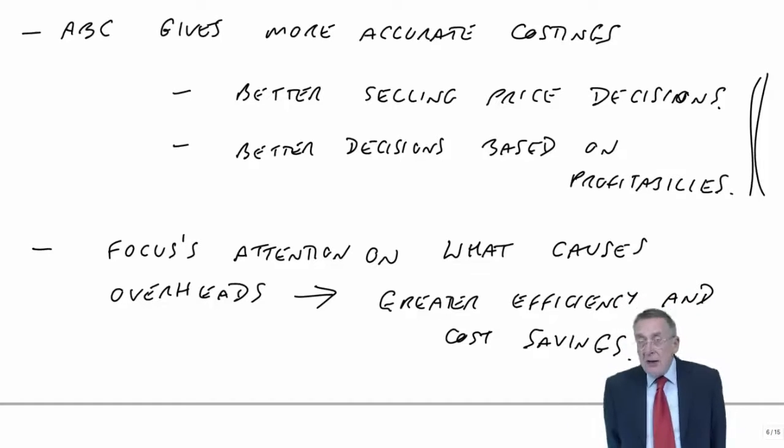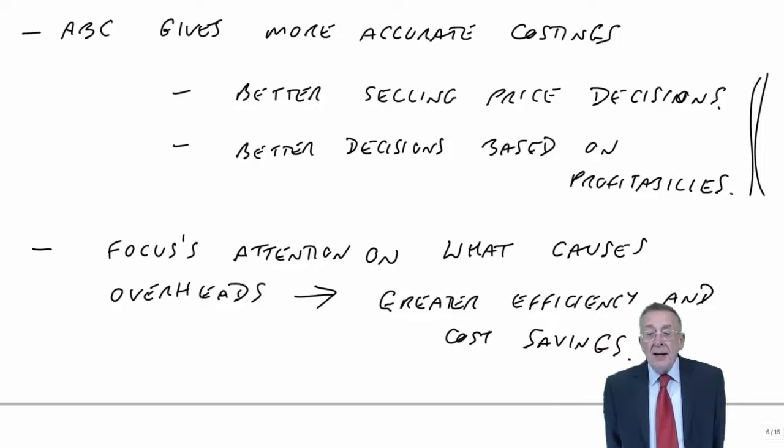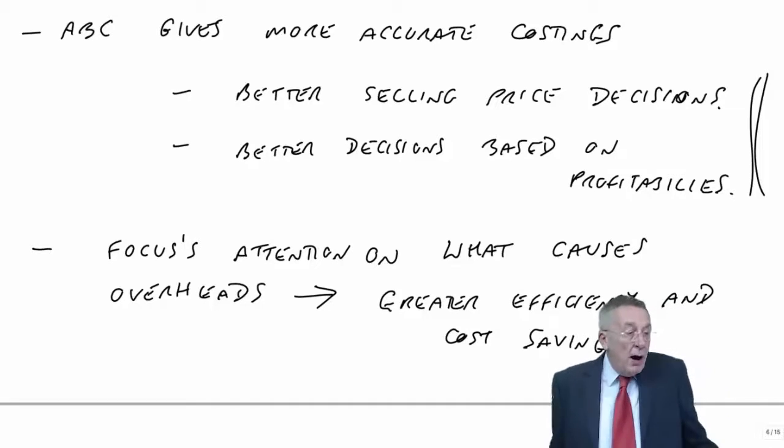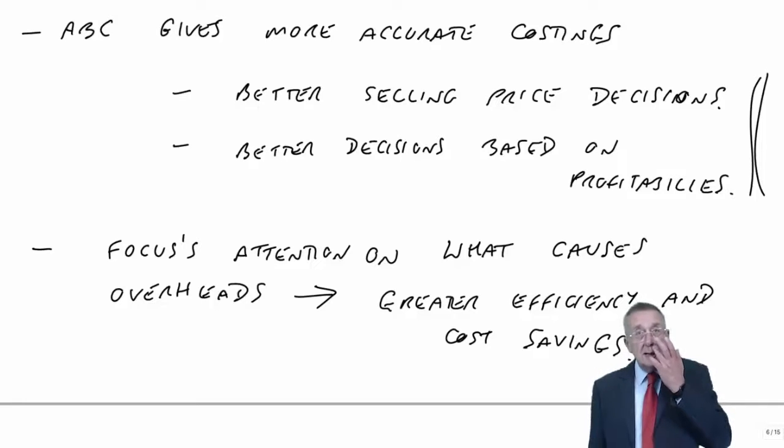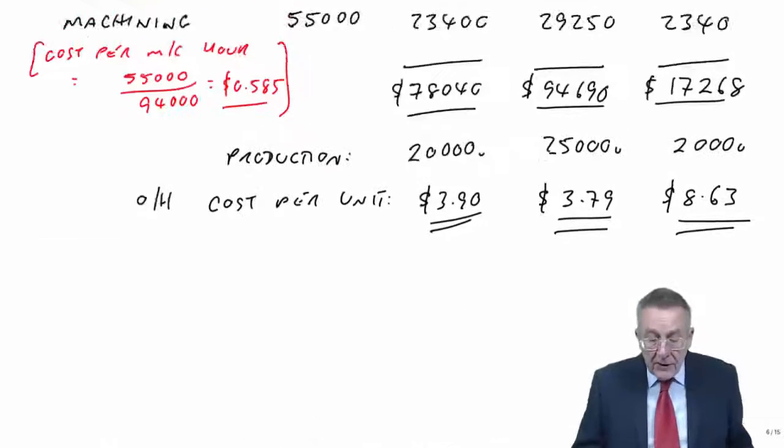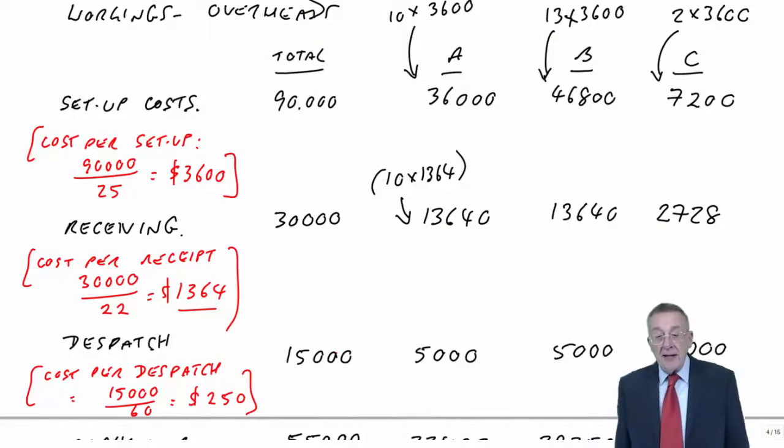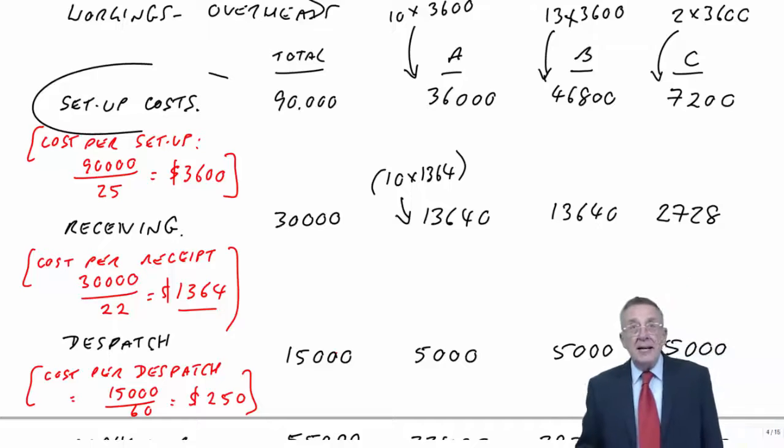What I mean by that - under traditional absorption, we simply said the total of overheads was £190,000, and we did the arithmetic. But we didn't spend any time worrying about why were we spending £190,000 in the first place. With activity-based, we're forced to find out what's it being spent on. £90,000 was being spent on setting up machines, £30,000 on receiving goods and so on. So we're forced to find out where the costs are.